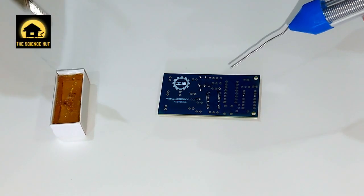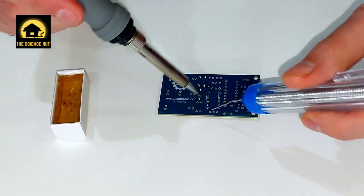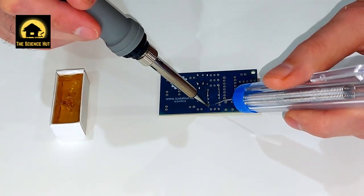Ensure your soldering iron is hot, then place the tip into some soldering resin. Resin is optional, but recommended.